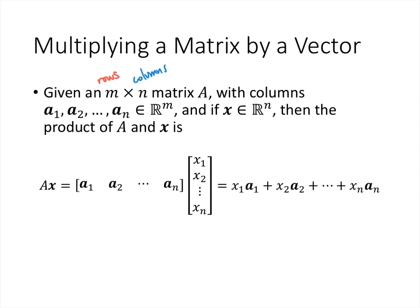We're going to give names to the columns of this matrix. When we write matrix A, a1 is the first column of A, a2 is the second column of A, and a_n is the last column of A. If it has n columns, then the last column will be a sub n.